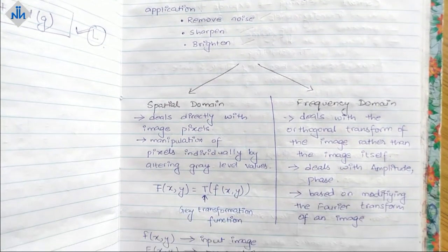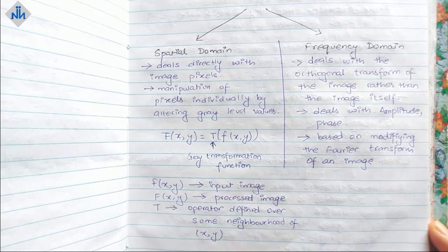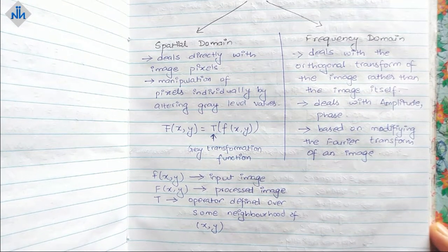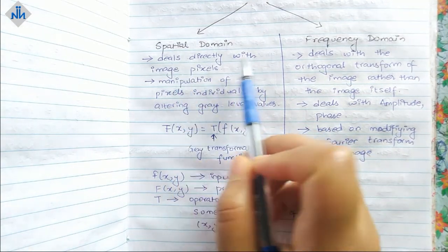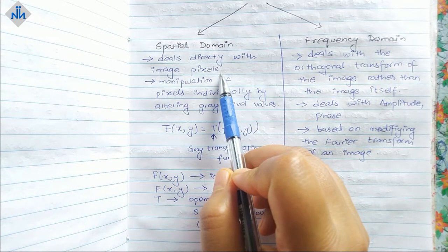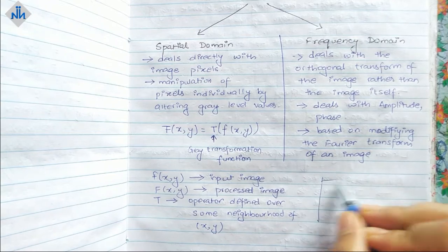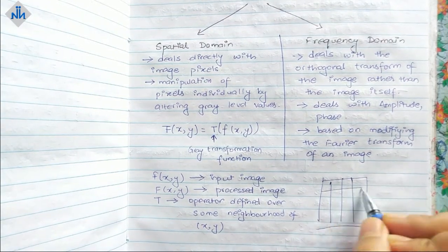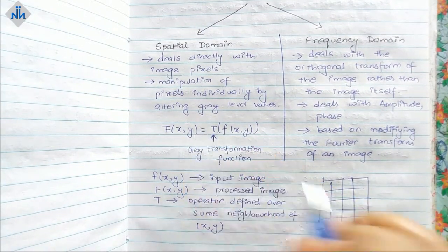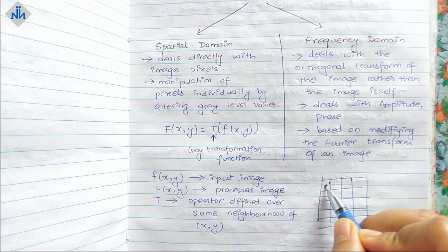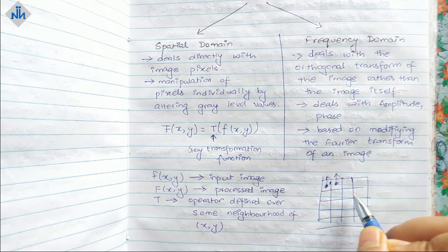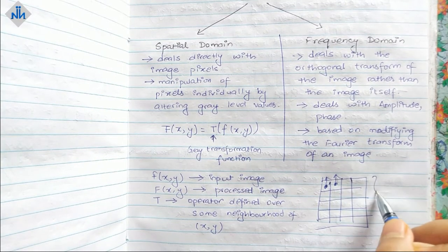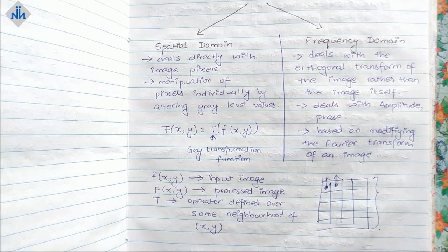There are basically two ways to do it: the spatial domain and frequency domain. What happens in spatial domain is it deals directly with the image pixels. We all know that our image is divided into many pixels. In spatial domain it takes a pixel and then enhances it first, then again takes another pixel and enhances it too. At the end our entire image will be enhanced.